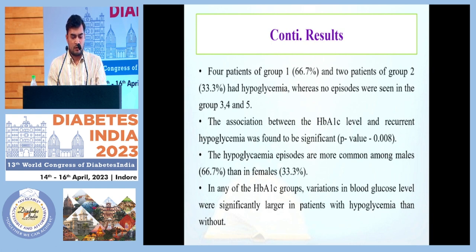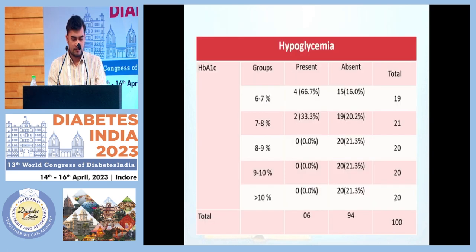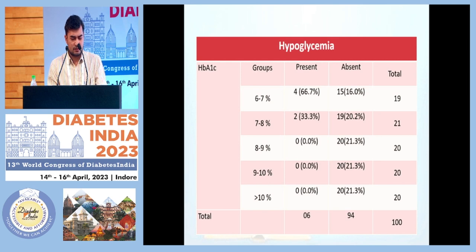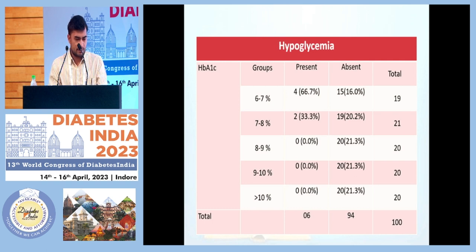Hypoglycemia episodes were more common among males than females. In any of the HbA1C level groups, variation in blood glucose level was significantly larger in patients with hypoglycemia than without. Summary: HbA1C group 6–7% had four hypoglycemic patients; group 7–8% had two; and the 8–9% group had no hypoglycemia episodes.